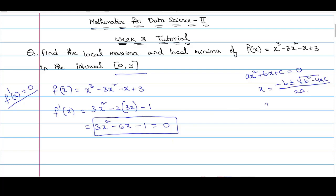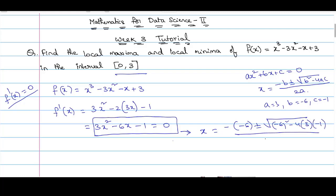Here a = 3, b = -6, and c = -1. Substituting these values, we get x = (-(-6) ± √((-6)² - 4·3·(-1))) / (2·3). Simplifying inside the square root: (-6)² = 36, and 4·3·(-1) = -12, so minus and minus gives plus 12, giving us 36 + 12 = 48, divided by 6.